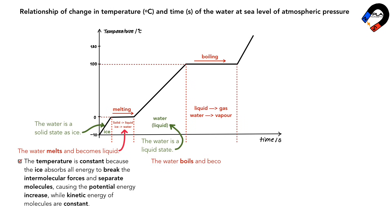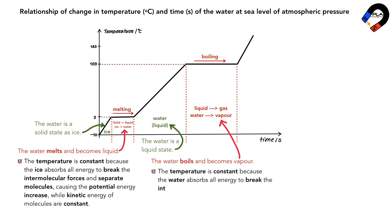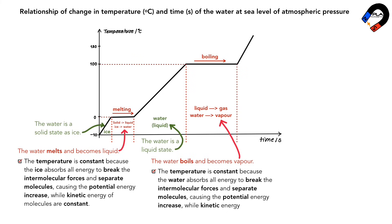At 100 Celsius, the water boils and changes from liquid to vapor. At boiling, the temperature is constant because the water absorbs all energy to break the intermolecular forces and separate molecules, causing the potential energy to increase while the kinetic energy of molecules remains constant. Between 100 and 120 Celsius, the water is a gas or vapor.